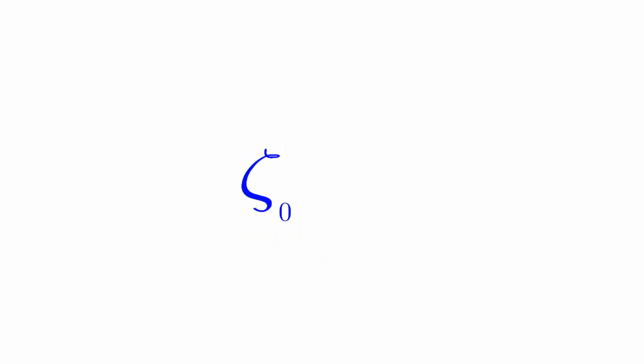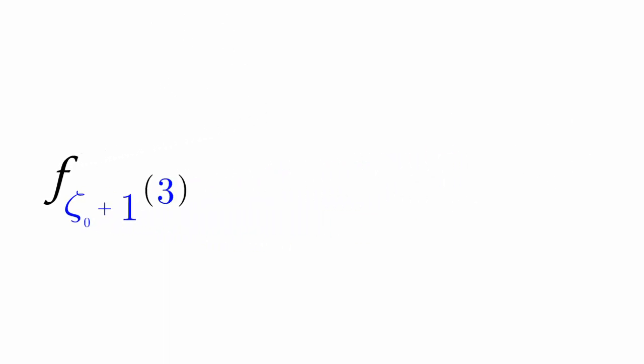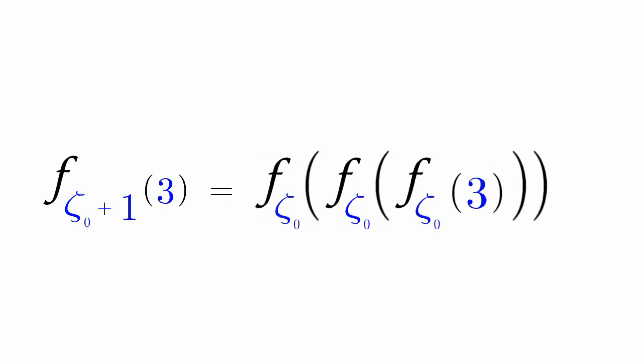We can do zeta naught plus 1. Let's have f(ζ₀+1)(3). This breaks down into 3 copies of the f(ζ₀) function.